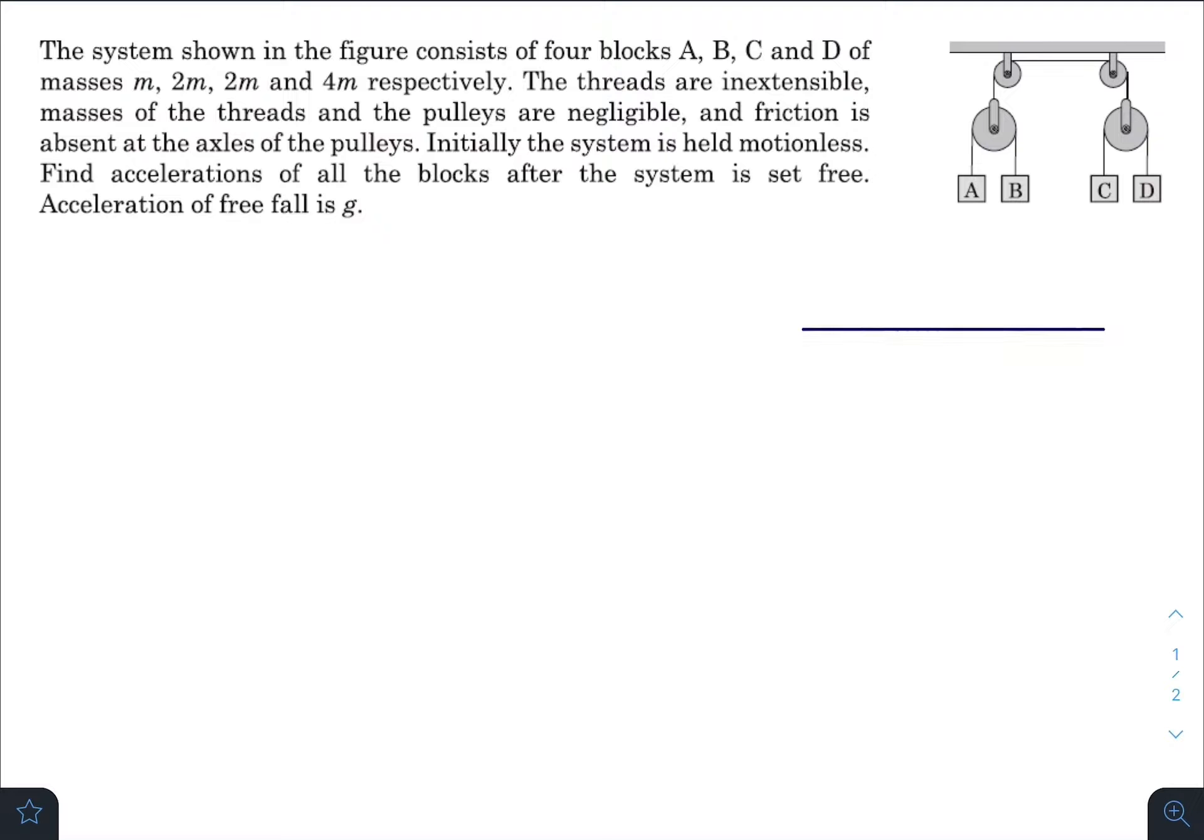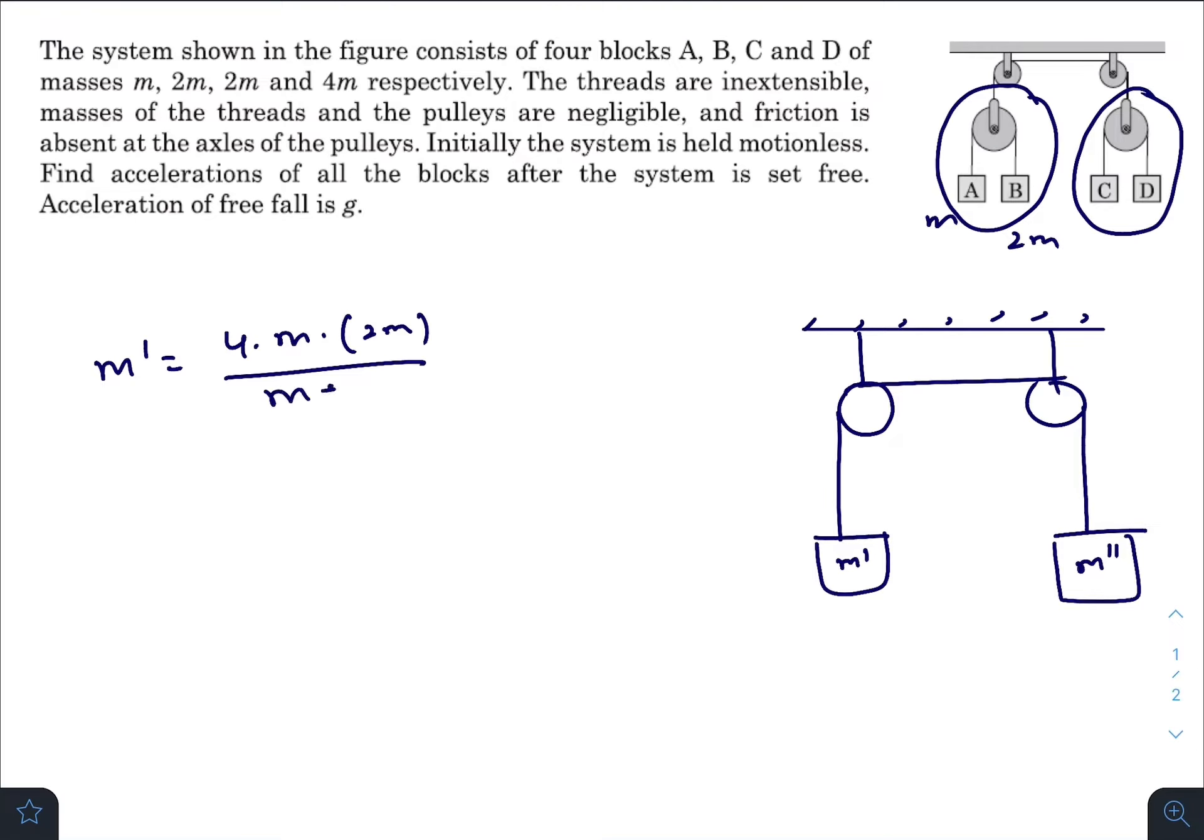So this system can be truncated into a more simpler system. We know this thing can be written as another mass m prime and this structure can also be squeezed into m double prime, where m prime equals, this is m, this is 2m, m times 2m divided by m plus 2m, which gives you 8 by 3m.